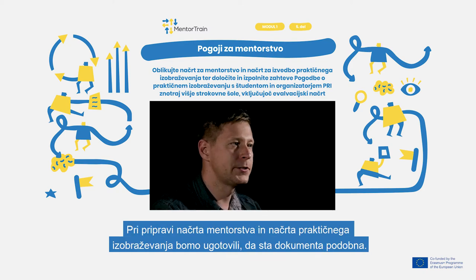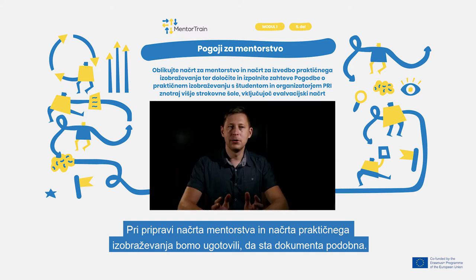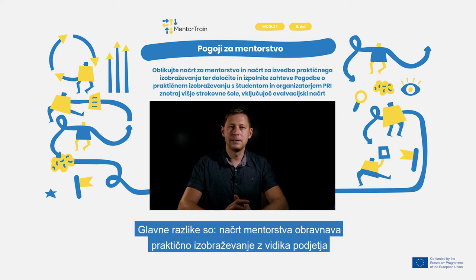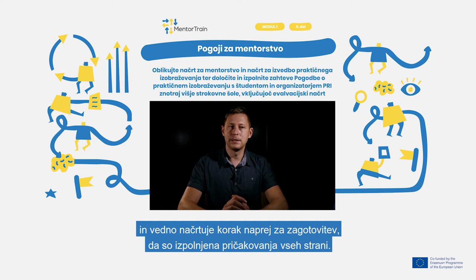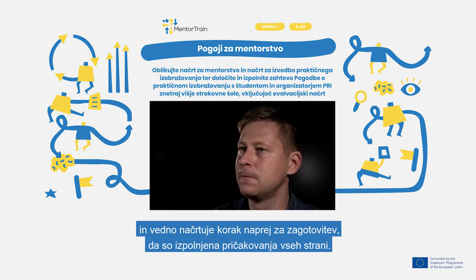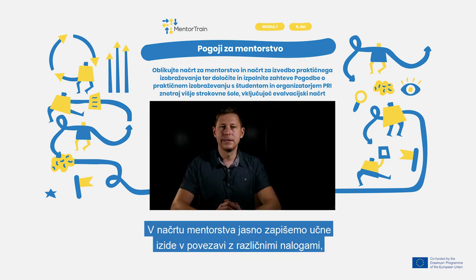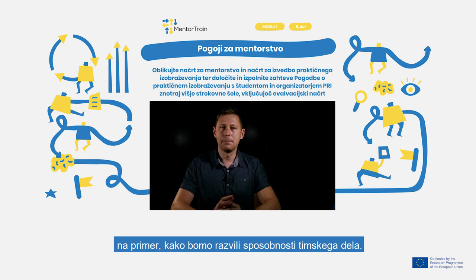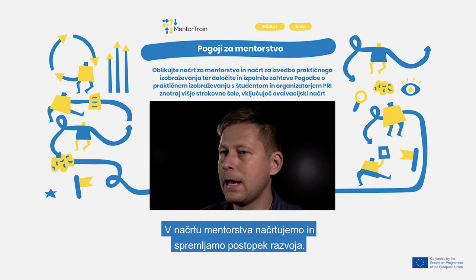When we prepare our mentoring plan and apprenticeship plan, we will see that both documents are similar. The main difference is that the mentoring plan is looking at the apprenticeship from the side of the company, and it's planned always one step ahead to be sure that we fulfill the expectations of all parties. In the mentoring plan we clearly write down the learning outcomes in connection with different tasks — for example, how we will develop teamwork capabilities — and we plan and monitor the development process.